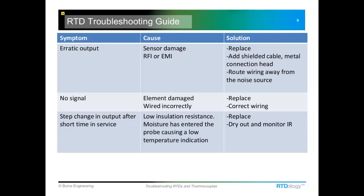The only solution is to replace the probe and maybe look at one that's more durable, or reposition the sensor to a location farther away from shock or vibration. One common place for mechanical shock to damage a sensor is in a pipeline with a steam injector just upstream of the temperature probe — when steam shoots into the pipe, it can cause a water hammer that will destroy an RTD in a very short amount of time.